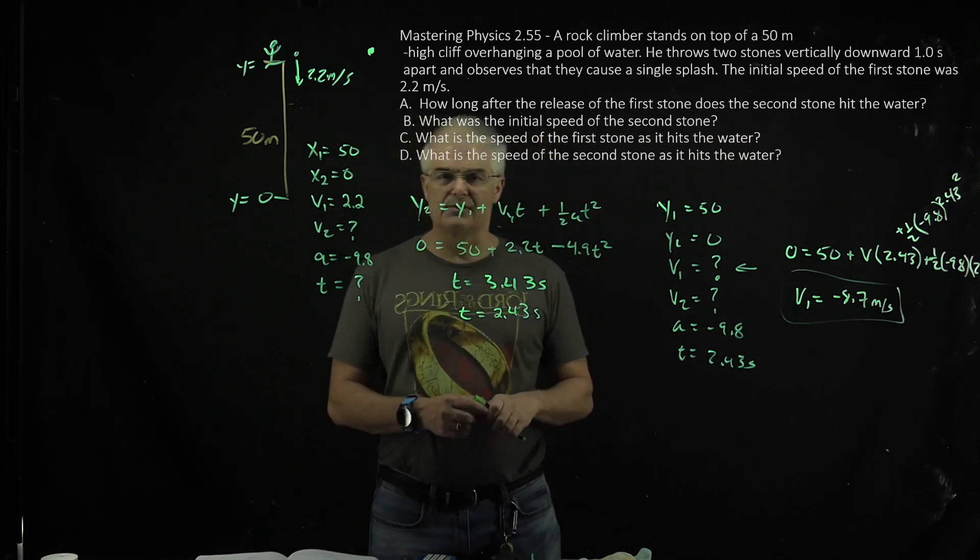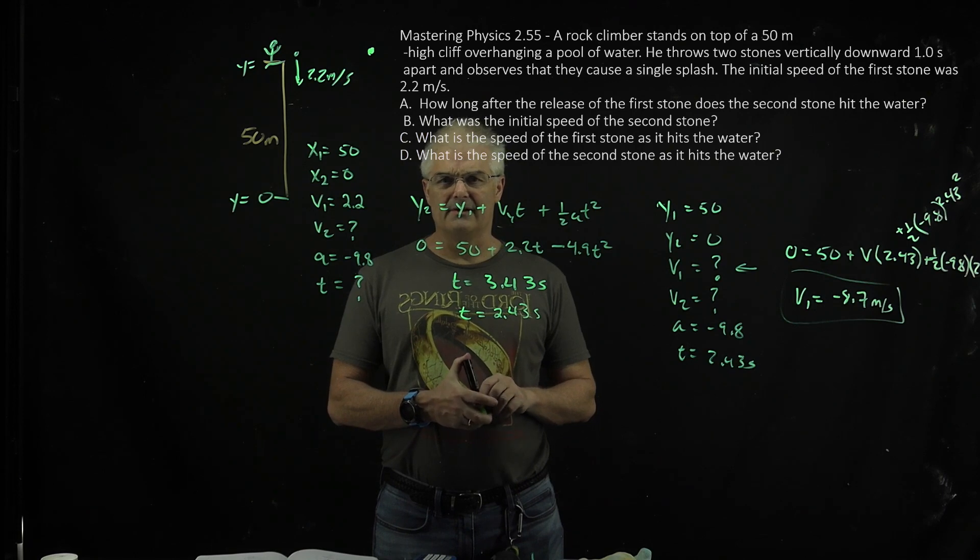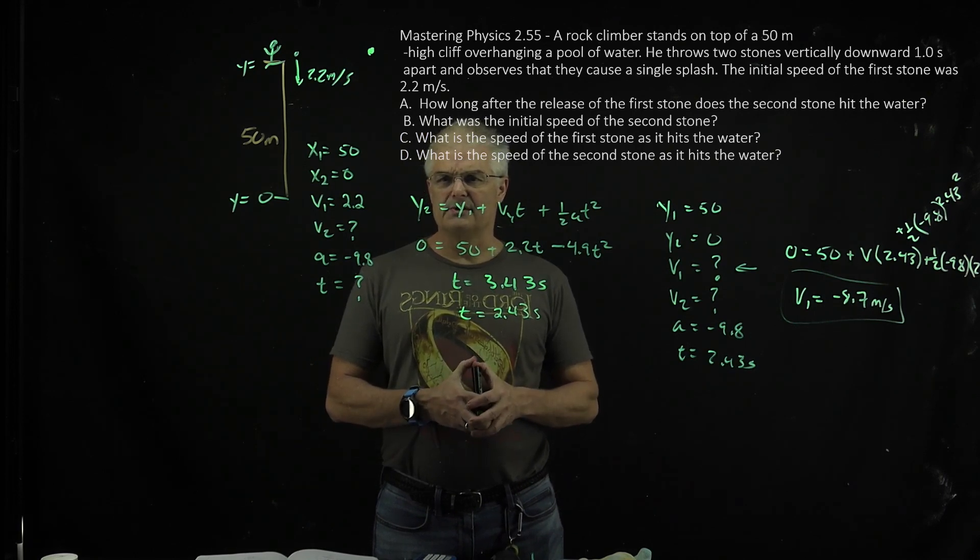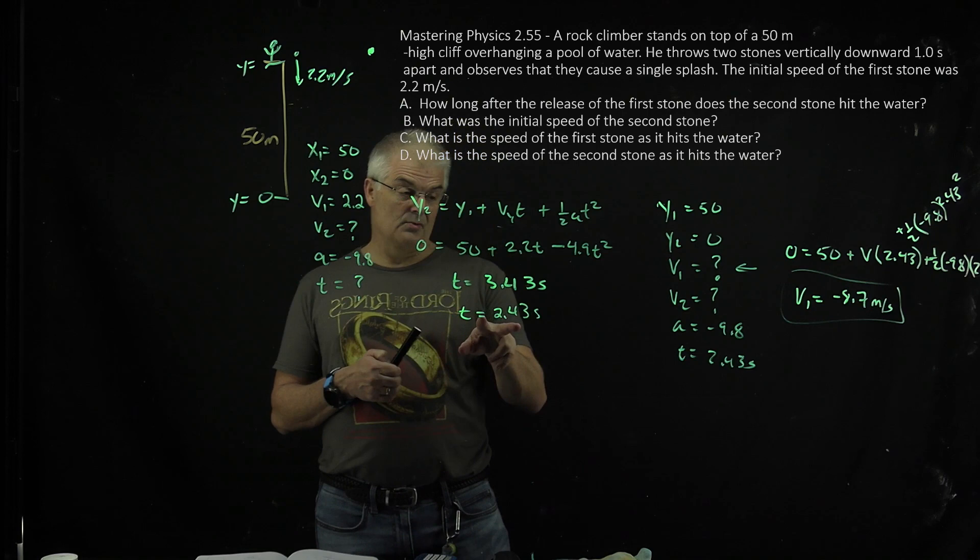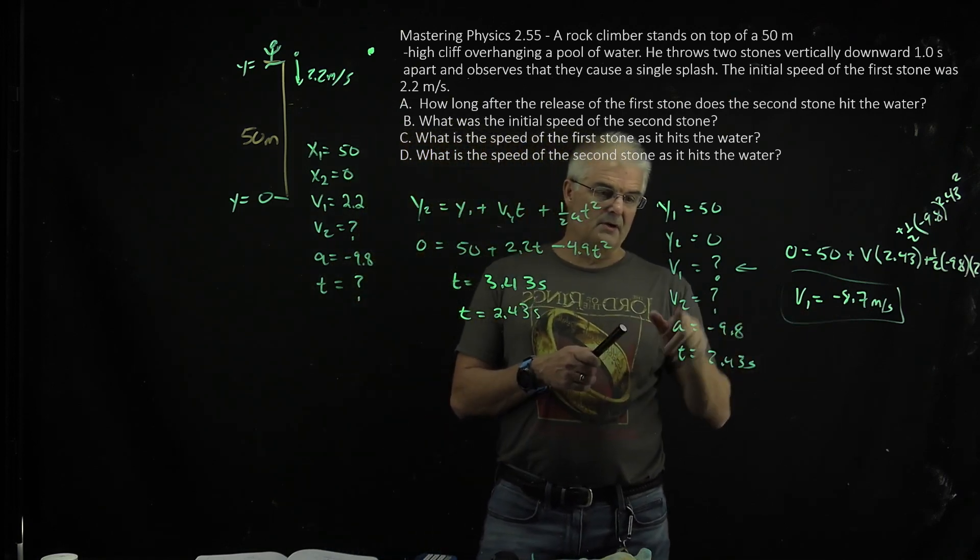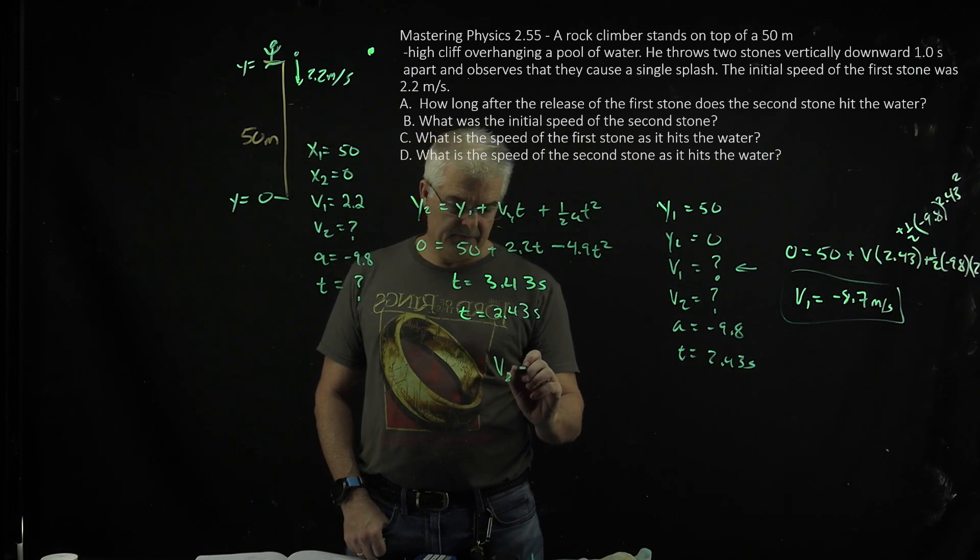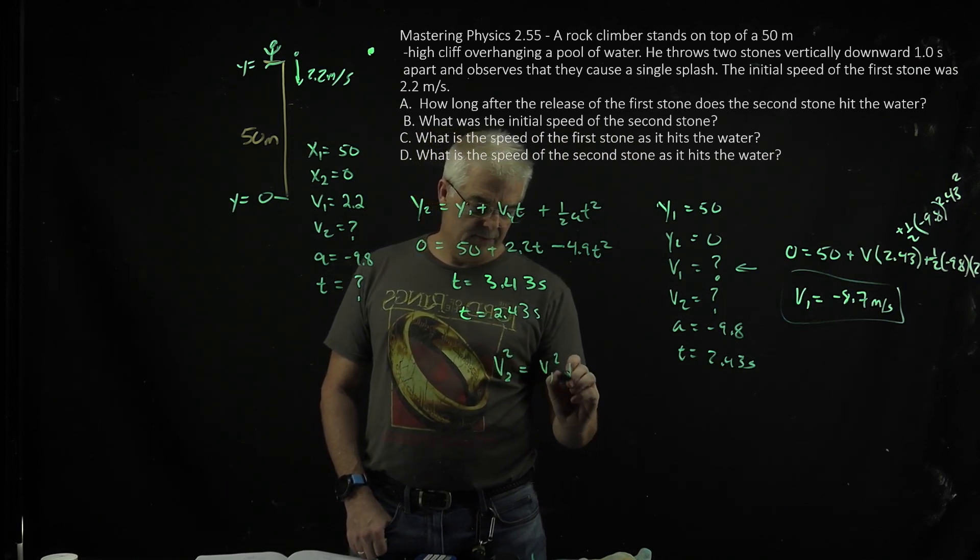How long after the release of the first stone did the second stone hit the water? They said they land at the same time. Those two stones were vertically downward. The initial speed of the first stone was 2.2, and they land at the same time. So that's at the same time. What is the speed of the second stone as it hits the water? So the second stone hits the water, we're solving for v2.